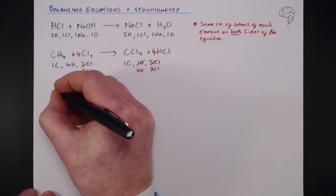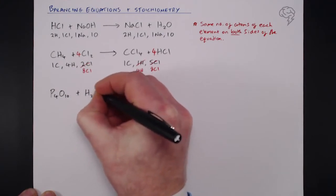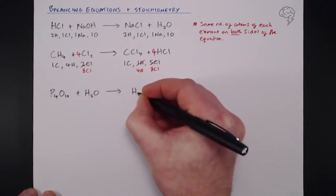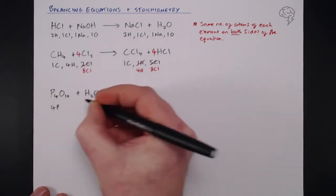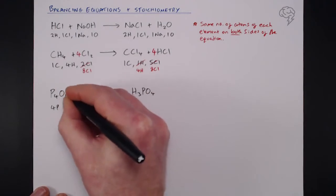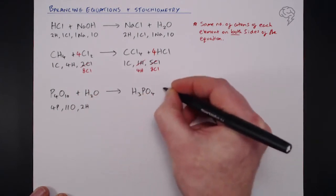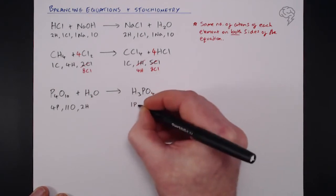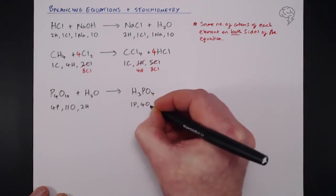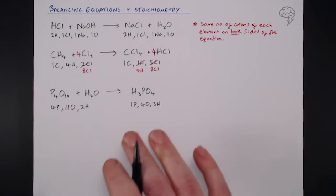Onto a third example: P4O10 reacting with water gives phosphoric acid, H3PO4. On the left we have four phosphorus, eleven oxygens (ten in P4O10 and one in H2O), and two hydrogens. On the right there's only one phosphorus, four oxygens, and three hydrogens. This might look like a nightmare, but it works out quite easily if you follow the rules.